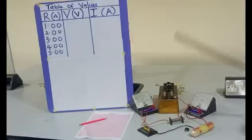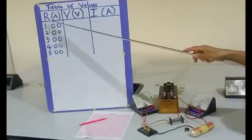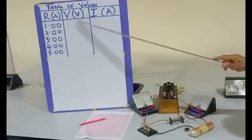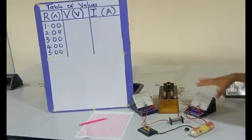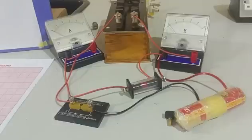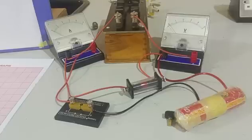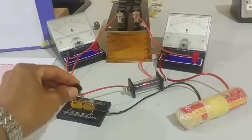Let's do the practical and fill up the table of values so that we can plot the graph. We do it for R = 1, 2, 3, 4, 5. For each value of the resistor from the resistance box you will get the voltage from the voltmeter and the current from the ammeter. Let's close the key.